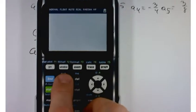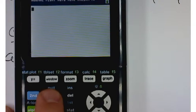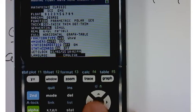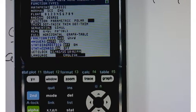First of all, change your mode to sequence. So you hit the mode key and then go down to function and over to the right and press sequence. Now that changes the mode of your calculator.